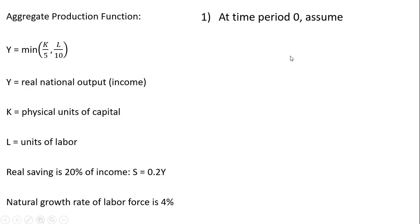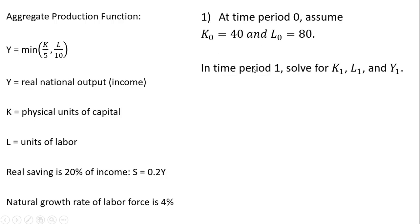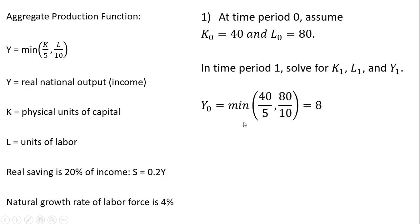Problem one: at time period zero, assume that capital is 40 and labor is 80. In time period one, we want to solve for the level of capital, level of labor, and level of output. To get started, we're going to calculate the level of output at time period zero by plugging 40 and 80 into our production function. 40 divided by 5 is 8, 80 divided by 10 is 8, so the minimum of 8 and 8 is just 8. This economy will produce 8 units of output in time period zero.